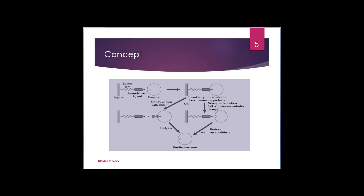However, the method requires detailed preliminary knowledge of the structure and biological specificity of the compound to be purified, so that conditions most likely to be successful may be carefully planned. For example, in the case of an enzyme, the ligand may be a substrate, competitive reversible inhibitor, or allosteric modifier. The conditions chosen would normally be those optimal for enzyme-ligand binding.